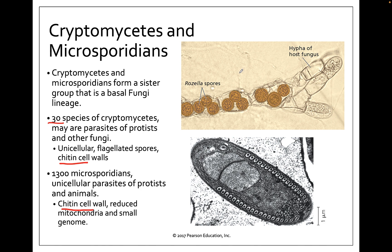Here you can see the rosella spores. These are a cryptomycetes species, and they mostly live as parasites — this one is a parasite inside of another fungus, and often these are found as parasites inside of protists as well. There are more species among the microsporidians, with 1,300 known. These are typically unicellular parasites that live inside of other protists and animals. They typically have reduced mitochondria and a very small genome consisting of about 2,000 genes, which is the smallest known eukaryotic genome.